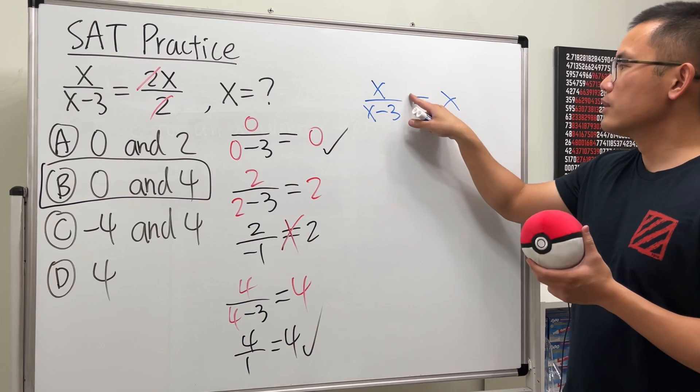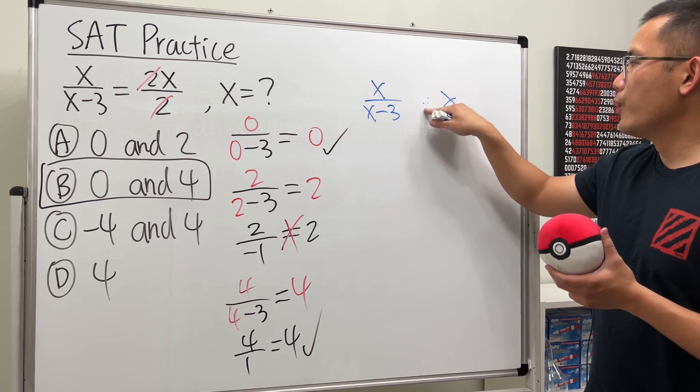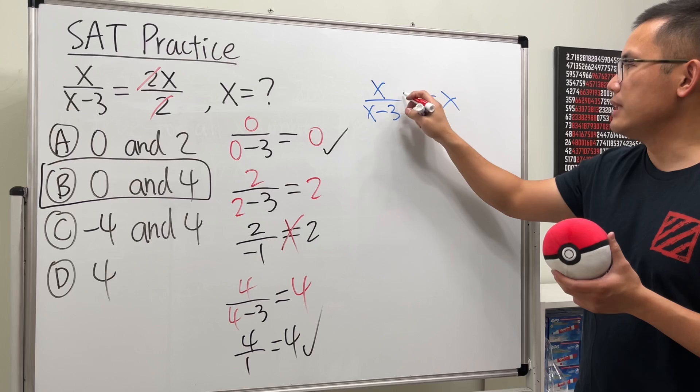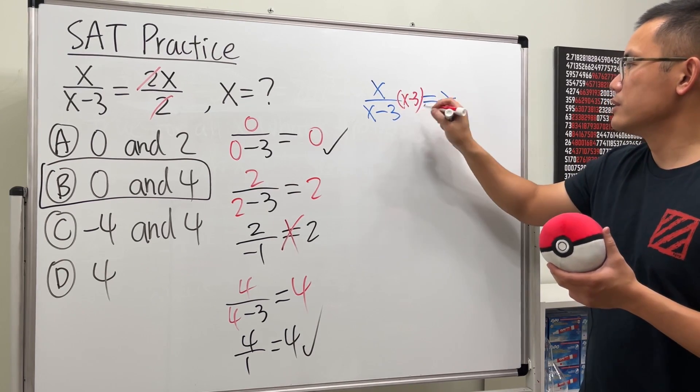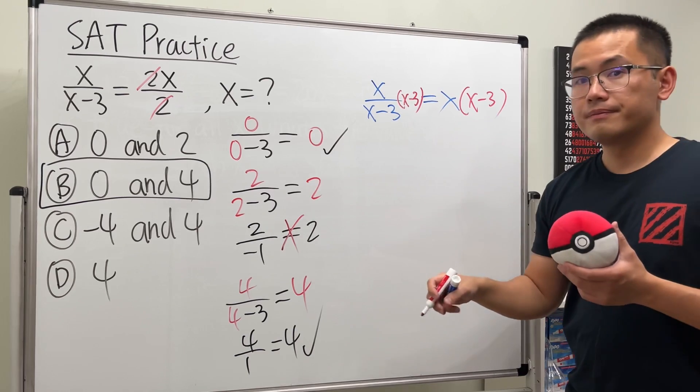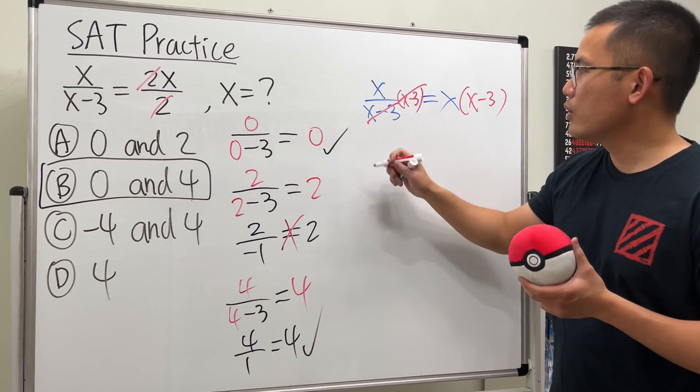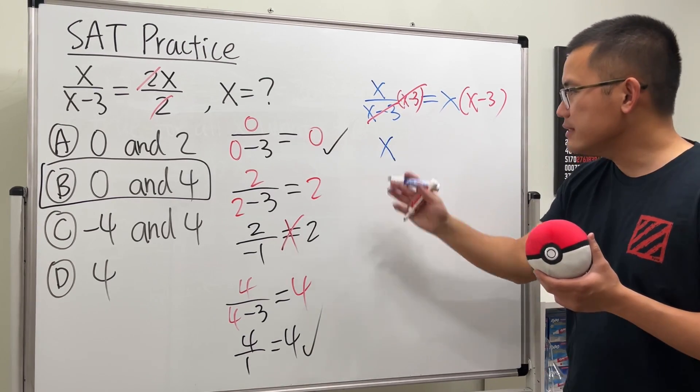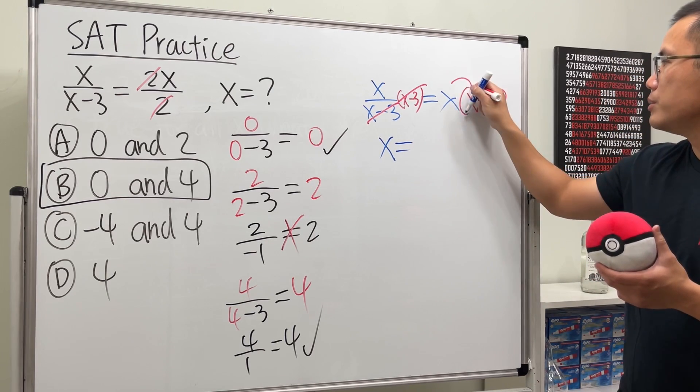So what we are going to do is we are going to just multiply both sides by the denominator. I'll put it here, so x minus three and then x minus three. This way this and that will cancel and we just get x on the left hand side. And then for the right hand side just distribute, so we get x squared minus 3x.